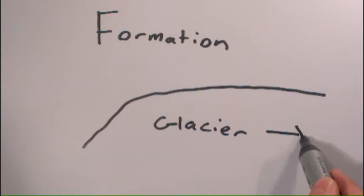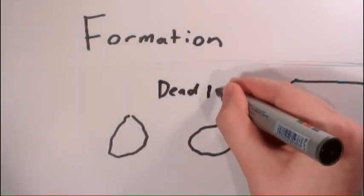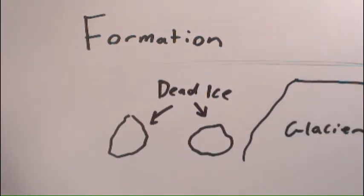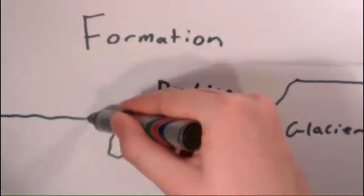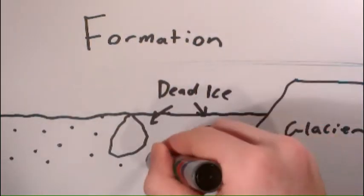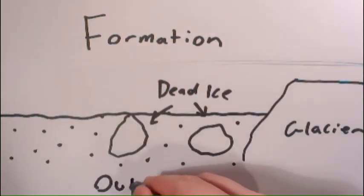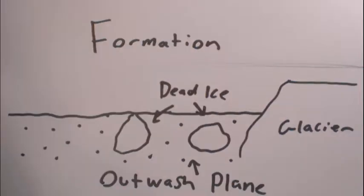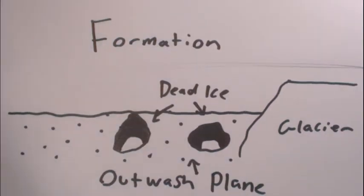Formation. Here we have a glacier. A Kettle Hole is formed when blocks of dead ice are left isolated as a glacier retreats. If conditions are correct, these isolated blocks of ice then become wholly or partially buried in outwash. Outwash is the material, chiefly sand or gravel, deposited by meltwater streams in front of a glacier. Dead ice melts under the covering of the outwash plane.